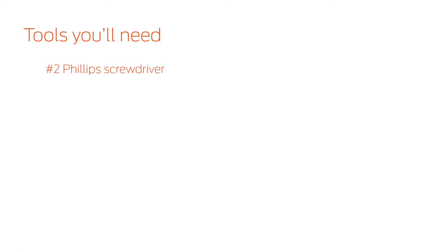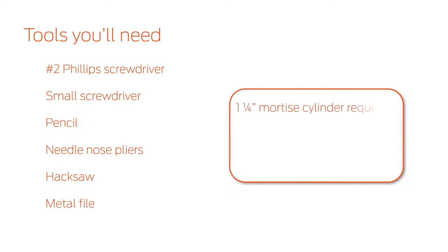These are the tools you will need. Please note, the ESL requires a 1 1⁄4-inch mortise cylinder and a straight cam, compression ring, and wave spring, which is not included. The cylinder may be keyed or a thumb turn. See the instructions for more information.